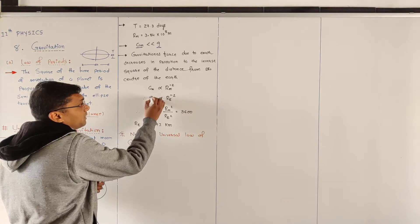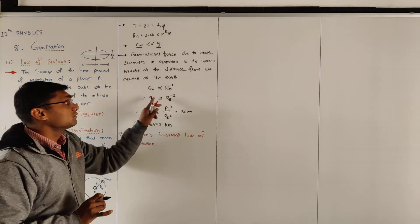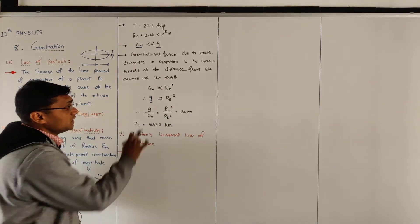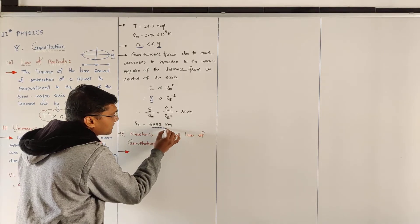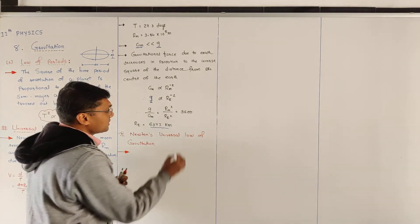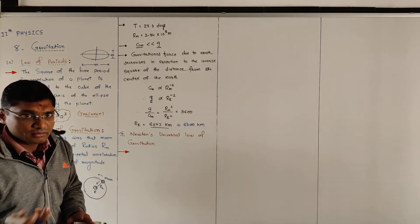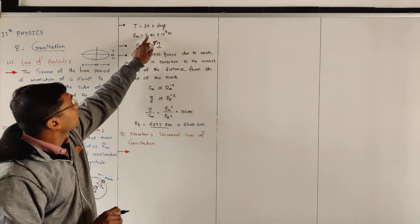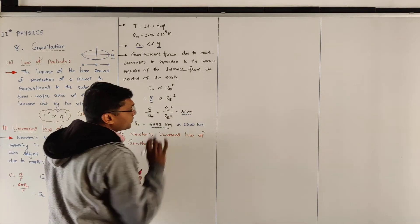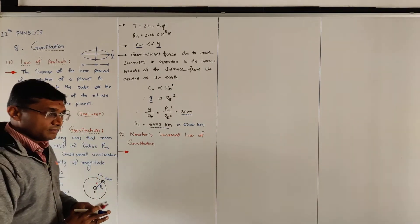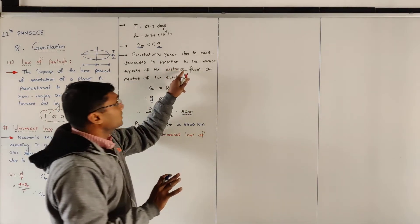So a_m means Moon's acceleration, and g means gravitational acceleration at Earth's surface. We can write g at r_e and a_m at r_m. Taking the ratio: g/a_m = r_m²/r_e². Here r_e is the radius of Earth — approximately 6371 km, which we approximate as 6400 km. Using these values, the ratio comes out to 3600, confirming that gravitational force is inversely proportional to the square of the distance.